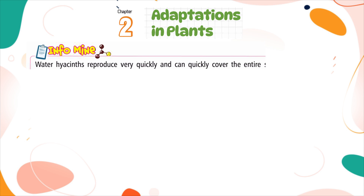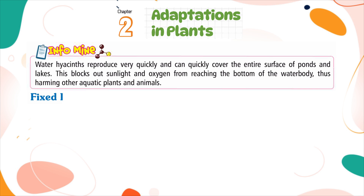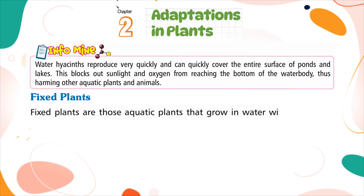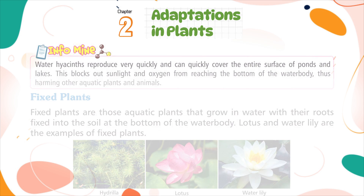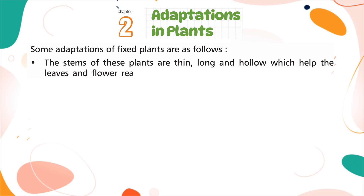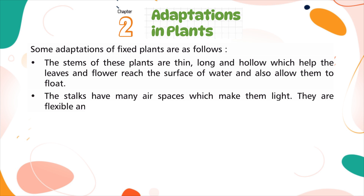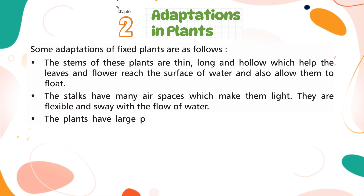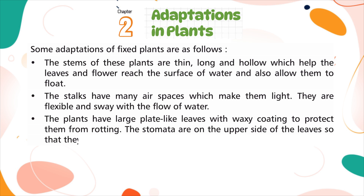Water hyacinths reproduce very quickly and can quickly cover the entire surface of ponds and lakes. This blocks out sunlight and oxygen from reaching the bottom of the water body, thus harming other aquatic plants and animals. Fixed plants are those aquatic plants that grow in water with their roots fixed into the soil at the bottom of the water body. Lotus and water lily are examples of fixed plants. The stems of these plants are thin, long and hollow, which helps the leaves and flowers reach the surface of the water and also allows them to float. The stalks have many airspaces which make them light, and they are flexible and sway with the flow of water. The plants have large plate-like leaves with waxy coatings to protect them from rotting. The stomata are on the upper side of the leaves so that they can exchange gases easily.